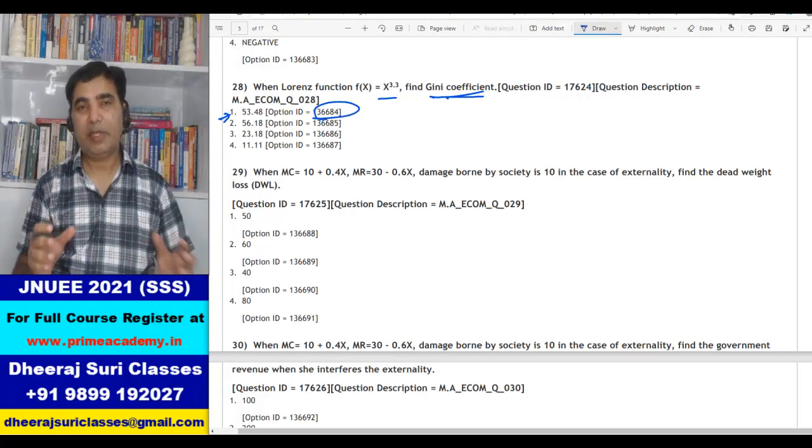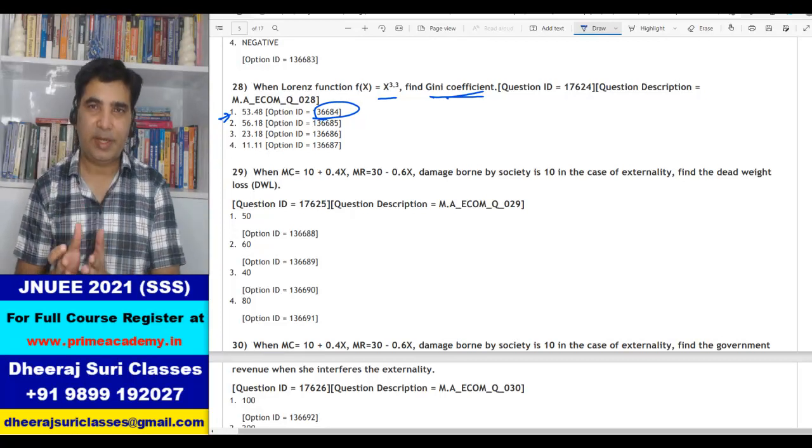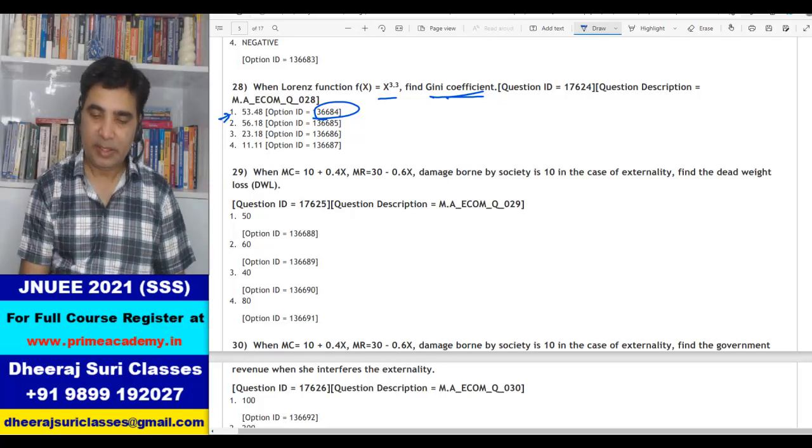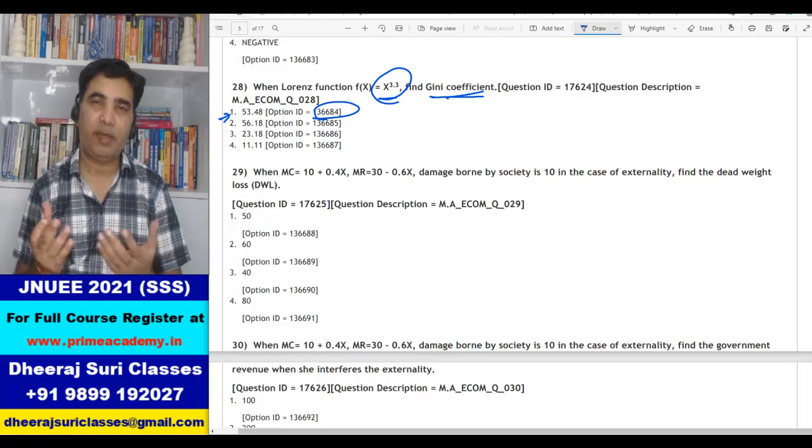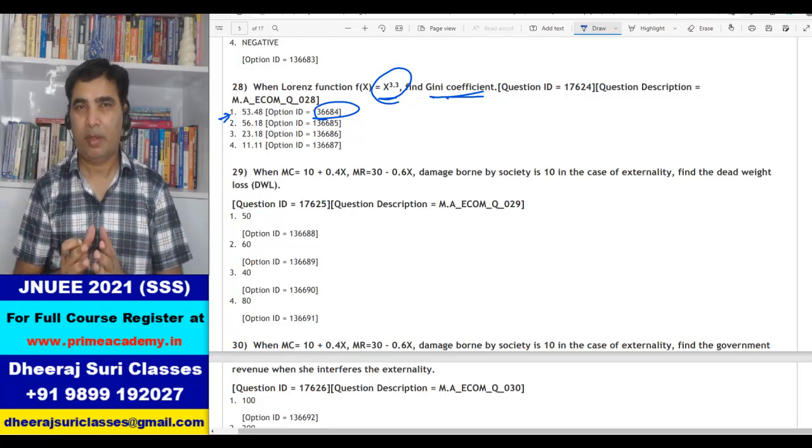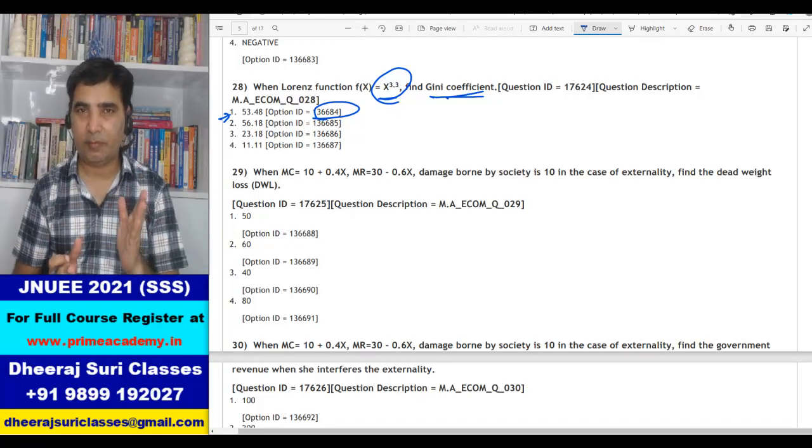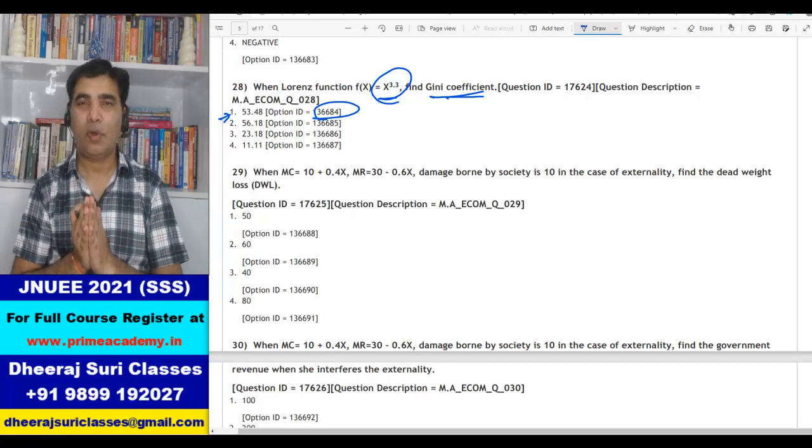So the purpose was to make you understand, if we have the Lorenz function, how can we compute the Gini coefficient? Now this particular function is not of very significance, because it might give you X power 4.3, X power 2.3, X power anything. But the important thing is, if we have the Lorenz function, how to find the Gini coefficient? I hope now you have understood this thing. Okay. Thank you.